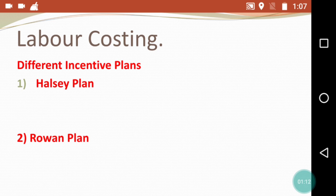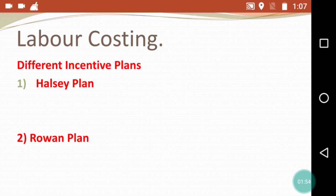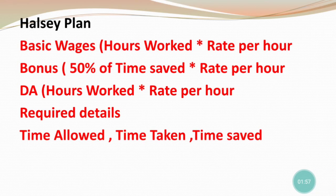I will solve practical questions in this video and explain how to calculate the Halsey and Rowan plan. My channel is called 'Last Minute Revision with RSM.' I have uploaded many model papers on economics, marketing, and other subjects — all PDFs are available. Join the Telegram channel via the link in the description, or search 'Last Minute Revision with RSM' on Telegram.